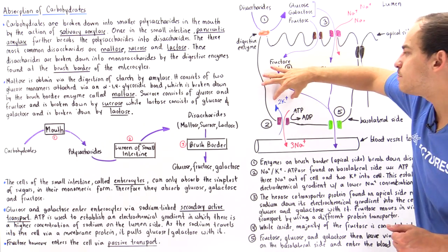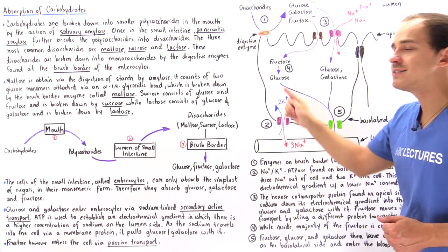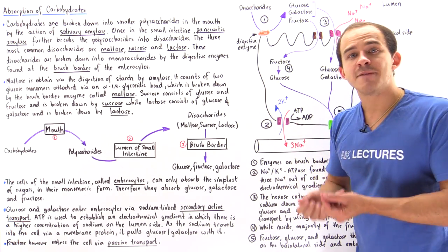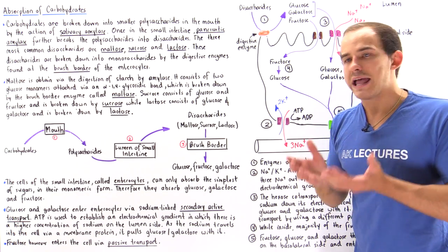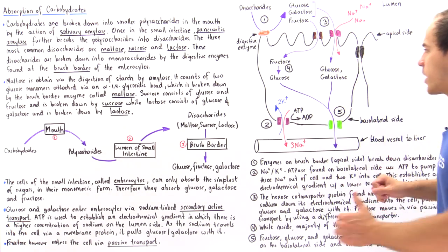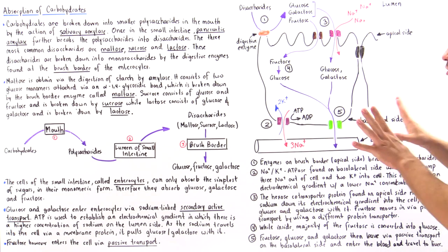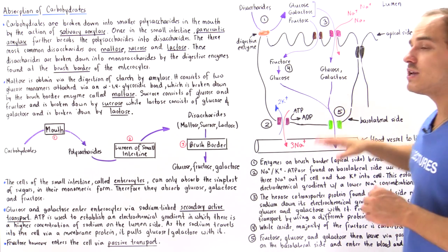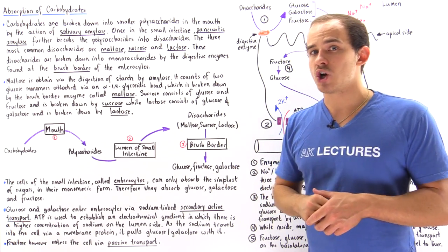Over time, this establishes an electrochemical gradient inside the cell, so that inside the cell we have a low concentration of sodium.